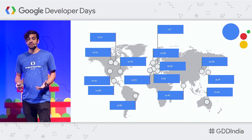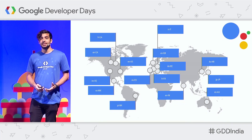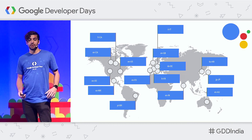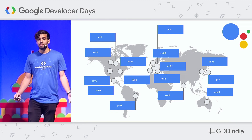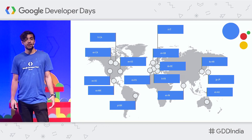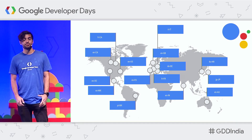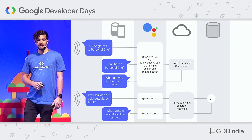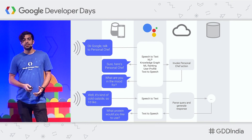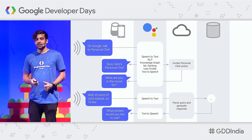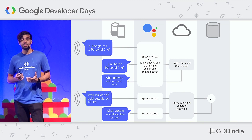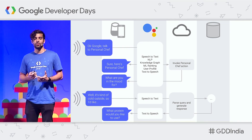By the way, the Assistant is available in many different languages. We're launching new languages and locales all the time, so you can support many users in different languages all around the world. We actually just announced support for Indian English. So how does an Assistant app work? We built an example around a personal chef, which is an app that suggests recipes based on what you want.